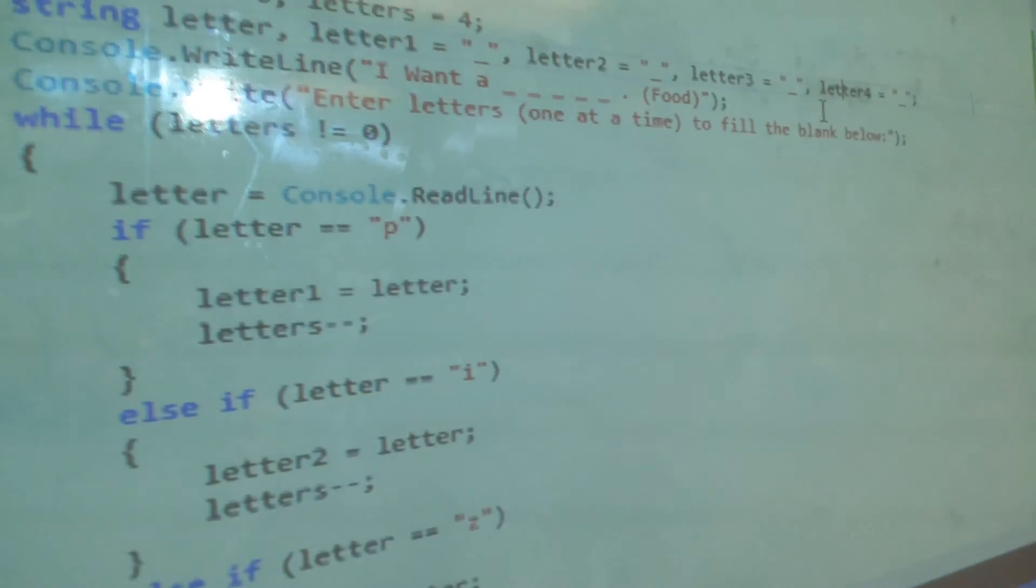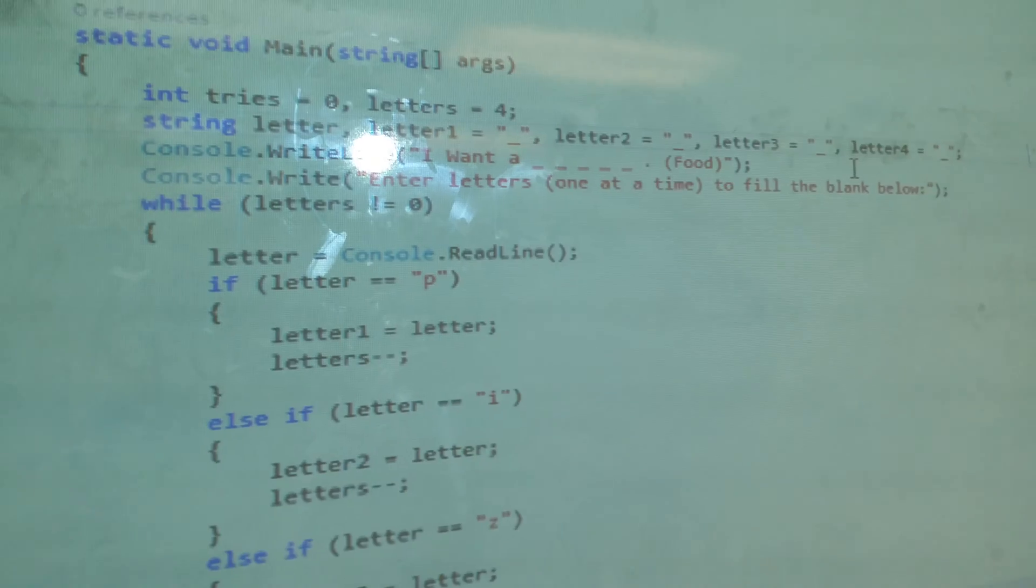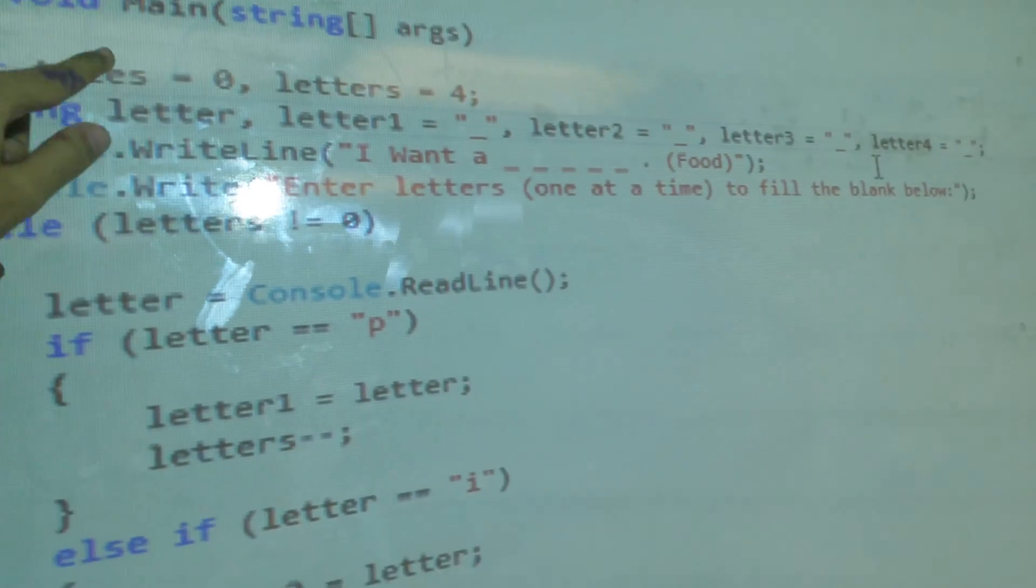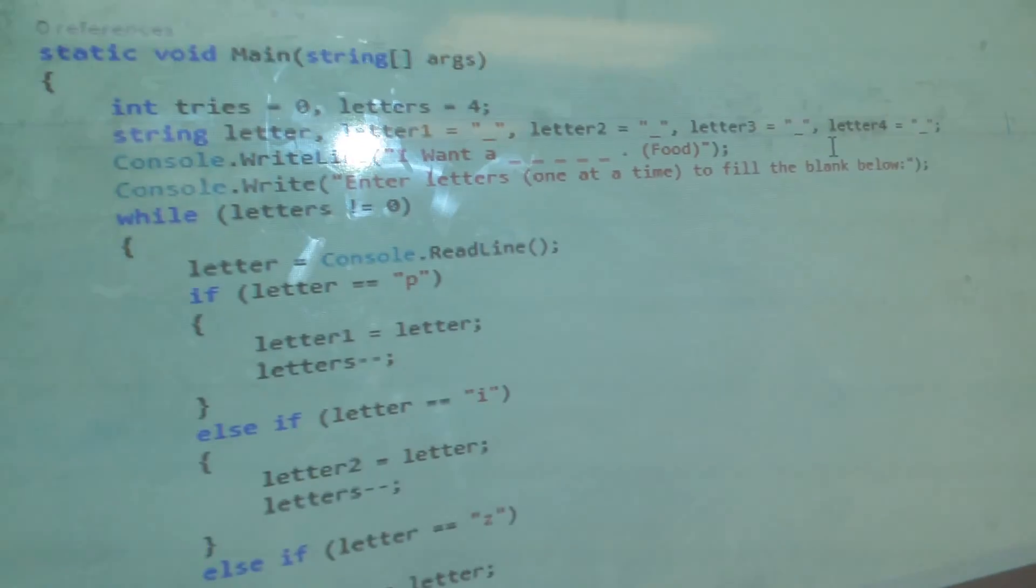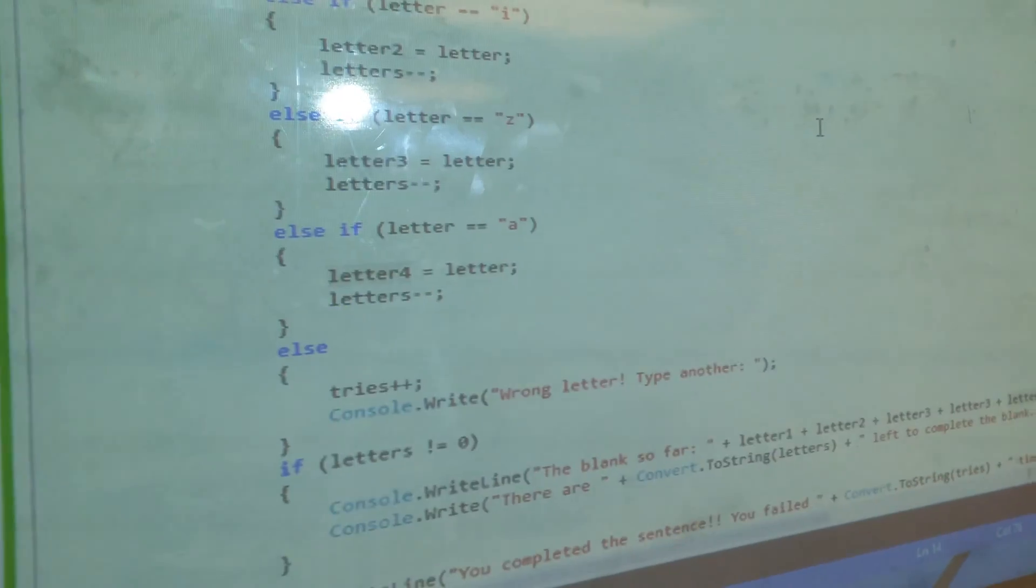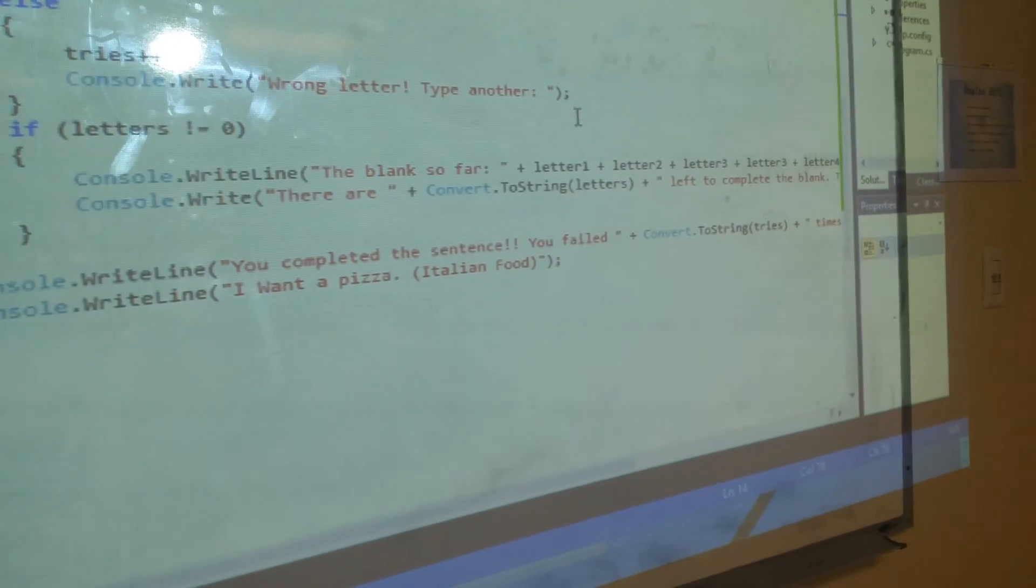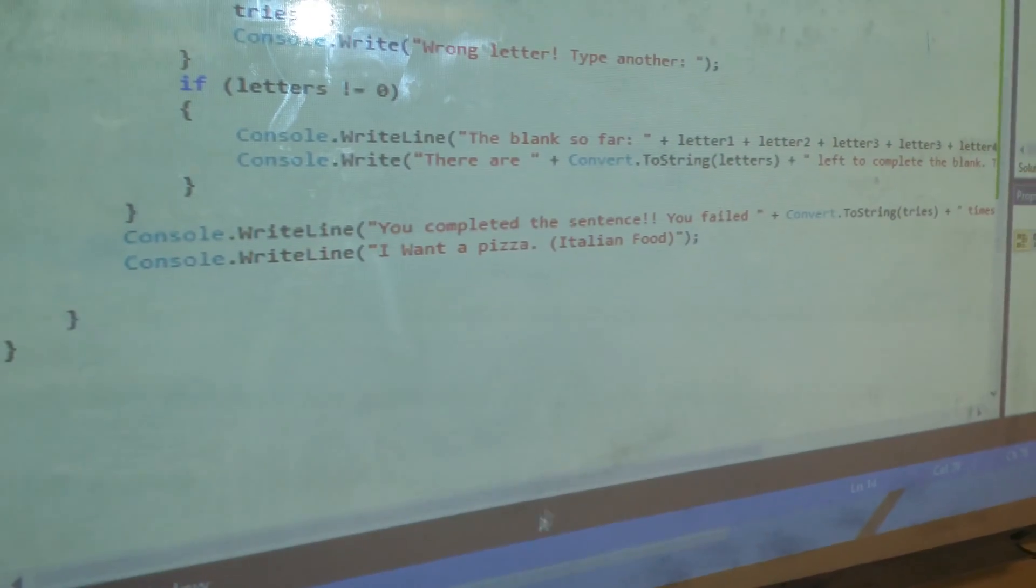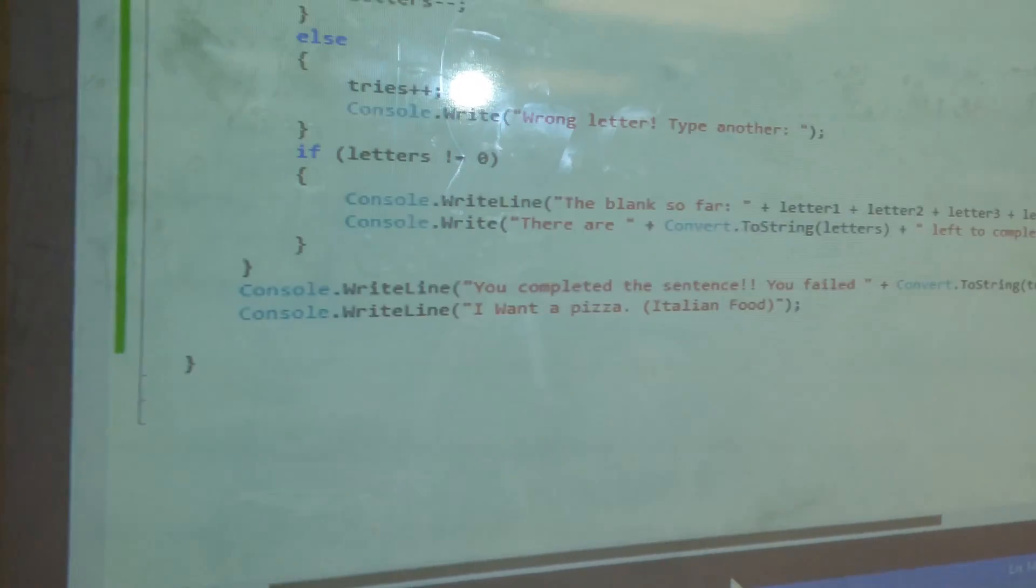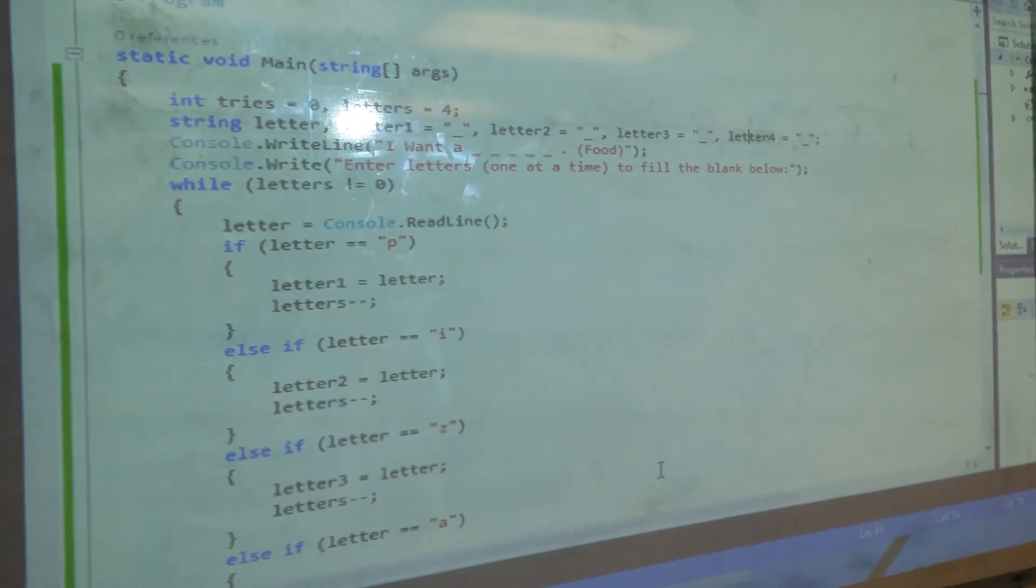And since it has four letters, this line tells to subtract one from the four, so when it reaches zero it will then exit the while loop that makes the user enter the letter and go to the sentence that says you complete the sentence. And the tries variable is the one that shows how many times you fail. And it is very simple. I'm going to scroll the code so you can type it later.